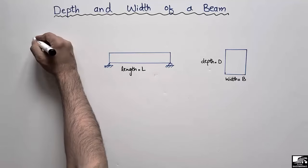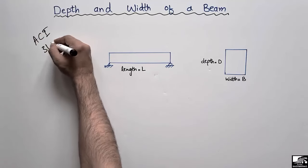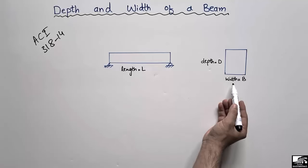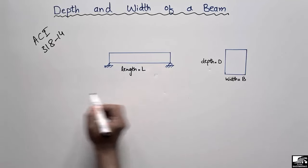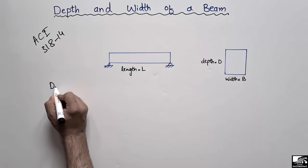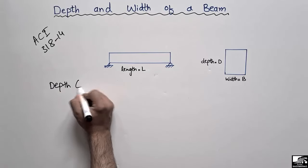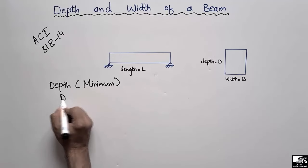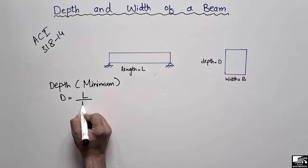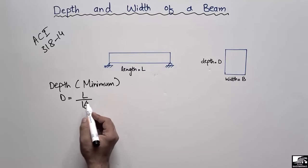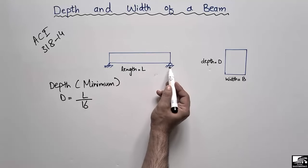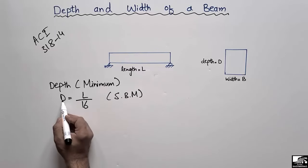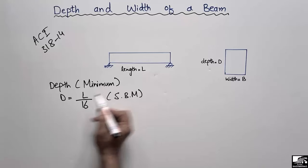According to the ACI (American Concrete Institute) 318-14 code, we can find out the minimum thickness and minimum width for a beam if we know its length. The formula given is: the minimum depth or thickness is equal to the length of the beam divided by 16. This formula is only valid for the simply supported case, so for a simply supported beam: minimum depth = L/16, where L is the length of the beam.